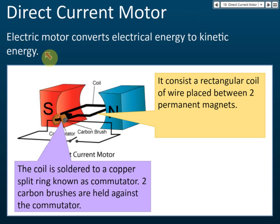First of all, let's see the structure. There's a rectangular coil of wire placed between two permanent magnets. In every direct current motor, there is a coil.